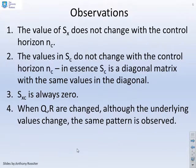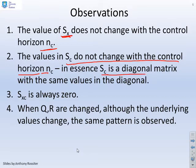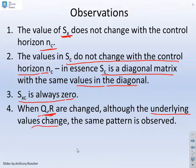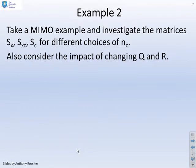The observations from these examples: the value of SX does not change with the control horizon NC; the values in SC also do not change with NC; SC is a diagonal matrix with the same values in the diagonal; and SXC is always zero. When Q and R were changed, the same patterns held, although the underlying values changed. Next, a MIMO example is examined to see if similar or different insights emerge.